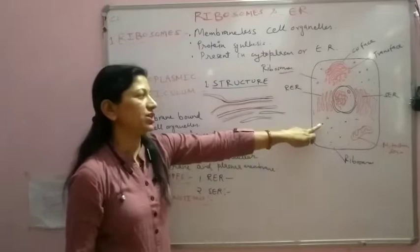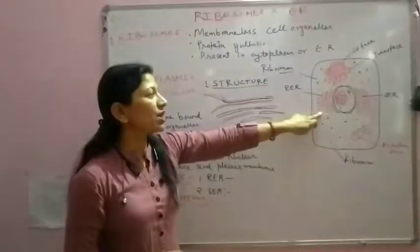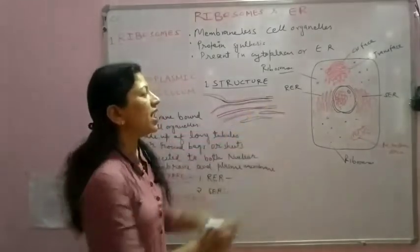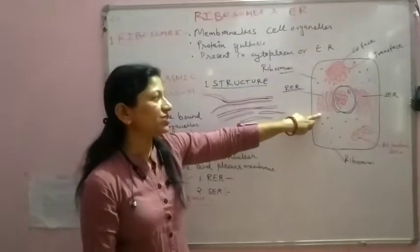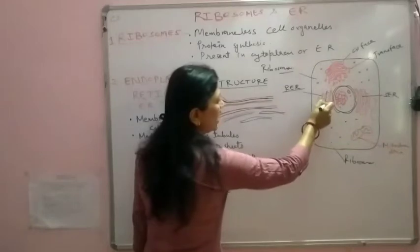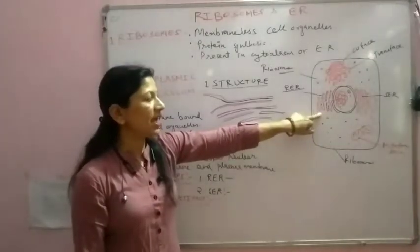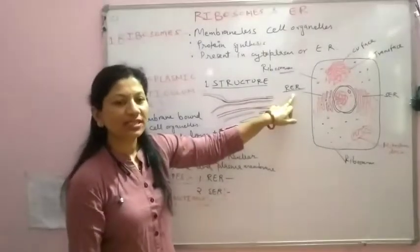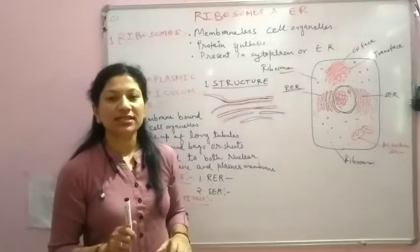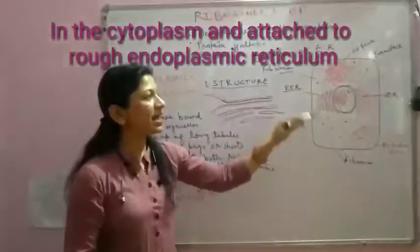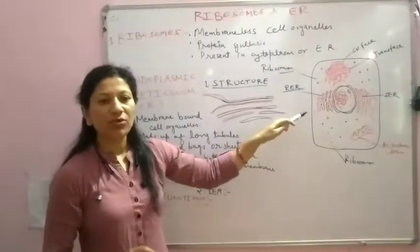Ribosomes are granule-like structures. They have two locations in the cell. First, they are found in the cytoplasm as free granules. Second, they are also found attached to the RER — rough endoplasmic reticulum. When ribosomes are attached to the surface of the endoplasmic reticulum, we call it rough endoplasmic reticulum. In free form they are scattered in the cytoplasm as granules, and in bound form they are attached only to rough endoplasmic reticulum.